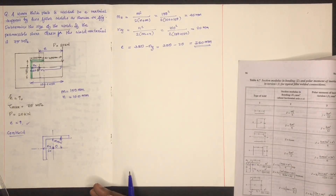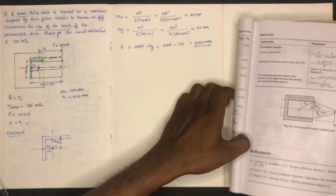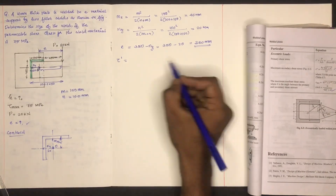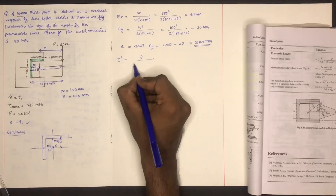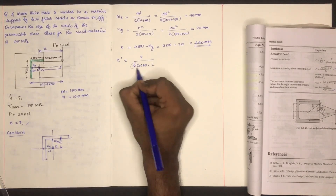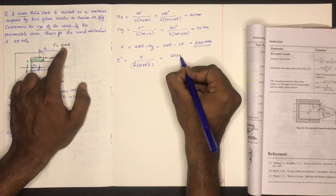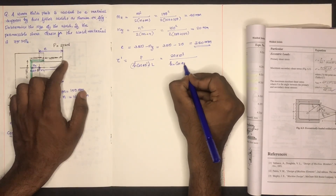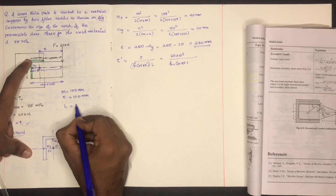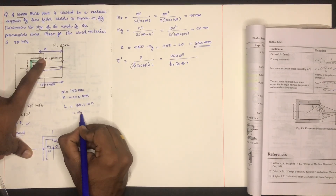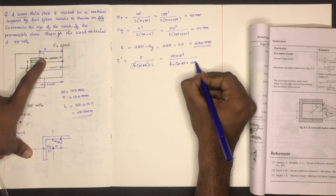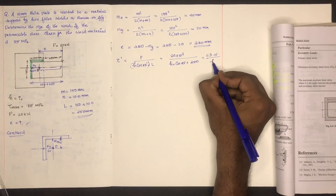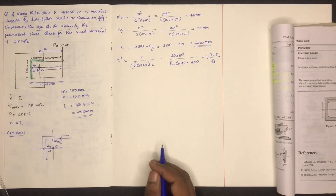If you are not aware of that, there are three equations. First is the primary shear stress: τ' = P divided by (h·cos45°·L). P equals 20 kN. The total length L: here it is 150 mm and here it is 250 mm, so L = 400 mm. Substituting gives τ' = 113.15 divided by h.